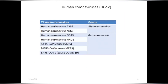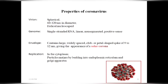There are seven human coronaviruses belonging to two genera — alpha coronaviruses and beta coronaviruses. Alpha coronaviruses consist of HCoV-229E and HCoV-NL63. Beta coronavirus consists of HCoV-OC43, HCoV-HKU1, SARS coronavirus, MERS coronavirus, and SARS-CoV-2, which causes COVID-19.